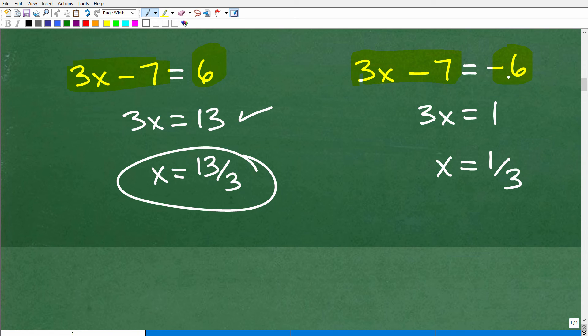And here, when I add 7 to both sides, I'm going to get 3x is equal to 1. And then I'm going to divide both sides of the equation by 3. So x is equal to 1 third.